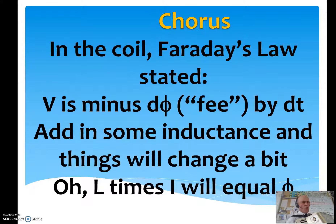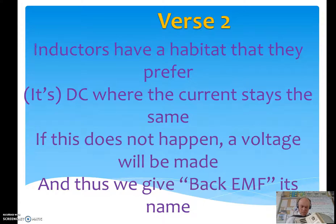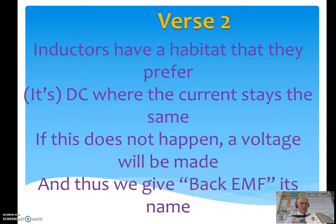In the coil, Faraday's law — on the checkbook or stated: V is minus d-phi by d-t. Add in some inductance and things will change a bit. Oh, L times I will equal phi. Inductors have a habitat that they prefer — it's DC, where the current stays the same.